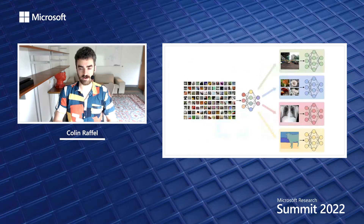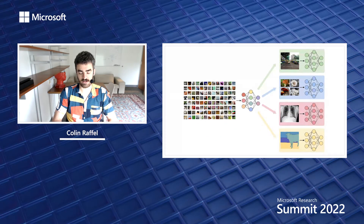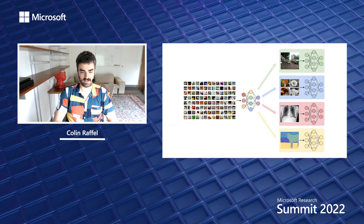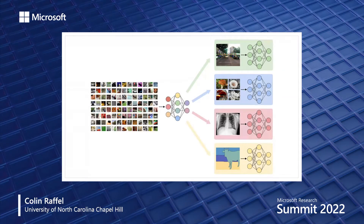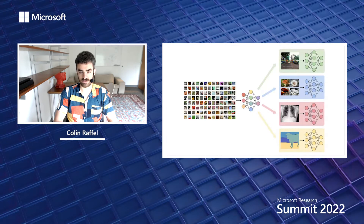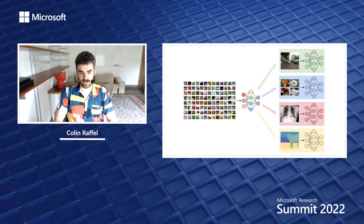Recently, a different paradigm has become a lot more common. Instead of starting from a randomly initialized model, we first pre-train the model on a large, diverse dataset related to the datasets we eventually want to train on. ImageNet, a large supervised classification dataset, is a diverse collection of images, so pre-training on this task provides a good starting point for subsequent training on downstream tasks. This pre-training step can help the model converge more quickly to a better solution with less labeled data, and has become a cornerstone of many machine learning pipelines.